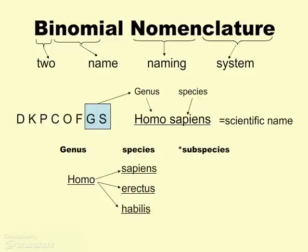Now there can be more than one species within a singular genus. In the case of Homo sapiens, there were enough characteristics in common between Homo sapiens, Homo erectus, and Homo habilis that we all kind of were grouped together in one genus.